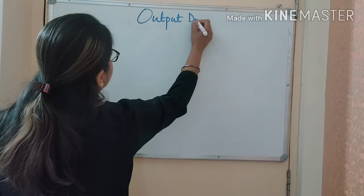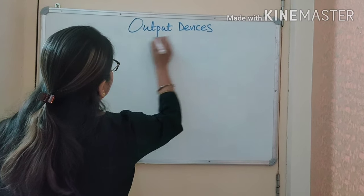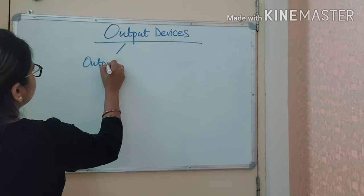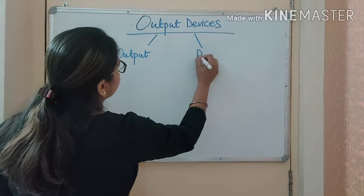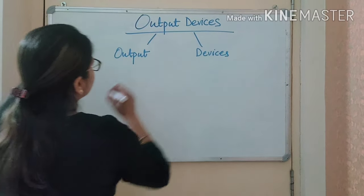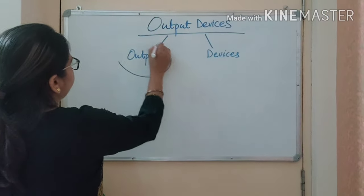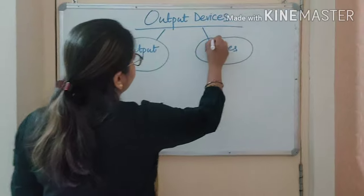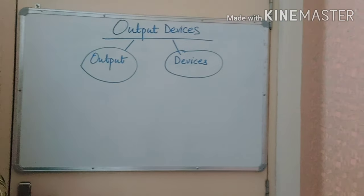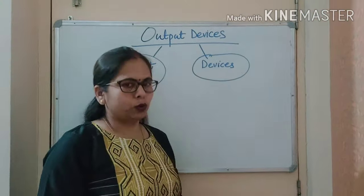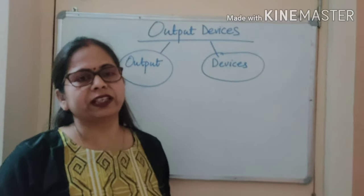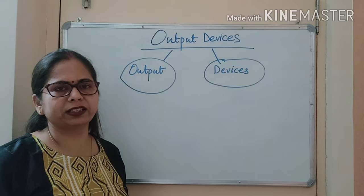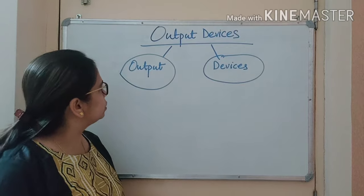Output devices — from these two words we can understand that the devices which are used to give the output are called output devices. In your junior classes also you have learned about output devices such as monitor, speaker, printer, and plotter. These are the common output devices which we use to show the output.